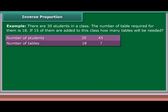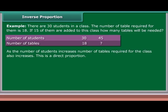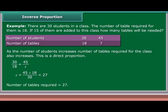Example: There are 30 students in a class and the number of tables required for them is 18. If 15 more students are added to this class, how many tables will be needed? As the number of students increases, the number of tables required also increases — this is a direct proportion. 30 upon 18 is equal to 45 upon x, so x equals 45 times 18 upon 30, which equals 27. Number of tables required is 27.